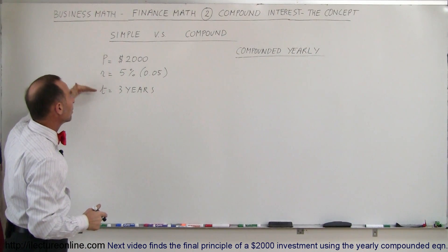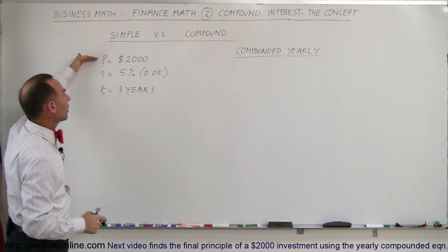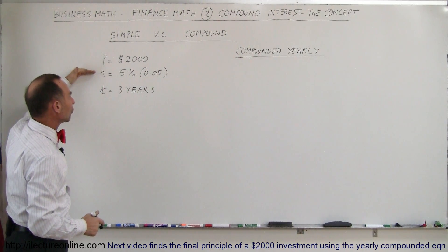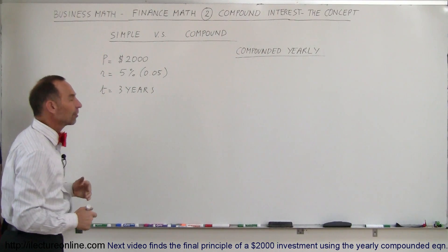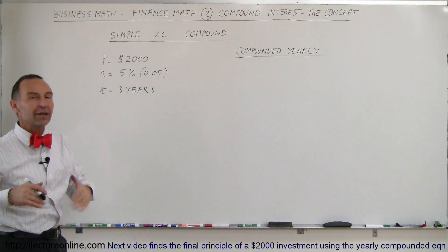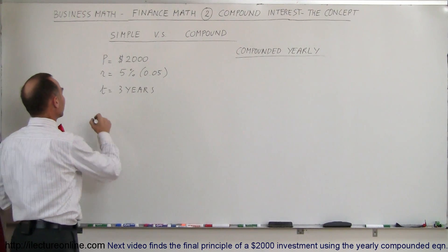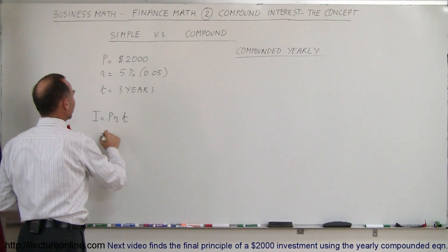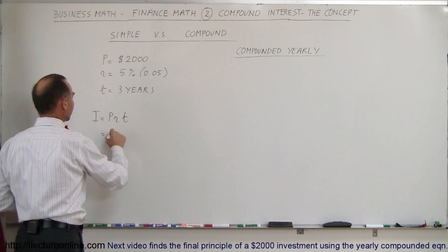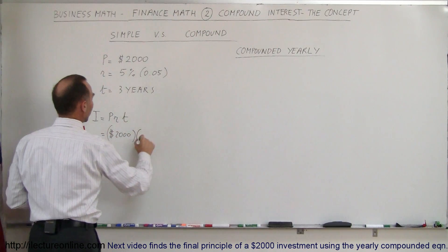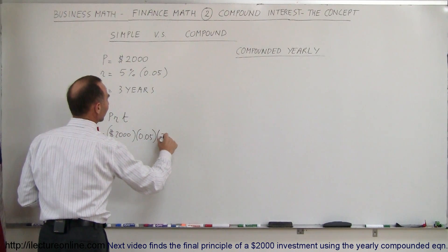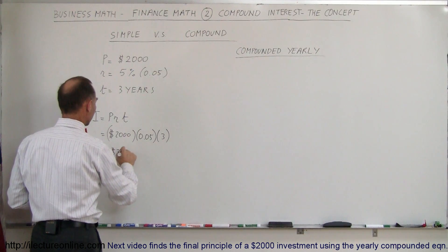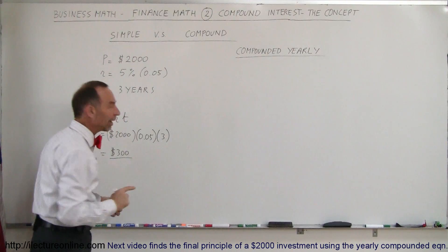Here we're working out the problem we did in the previous video. We're investing a principal of $2,000 at a 5% interest rate for a time of 3 years, but it's not compounded — you only get the interest at the end of 3 years. The interest earned equals principal times rate times time: $2,000 × 0.05 × 3 = $300. That would be the interest earned after 3 years.